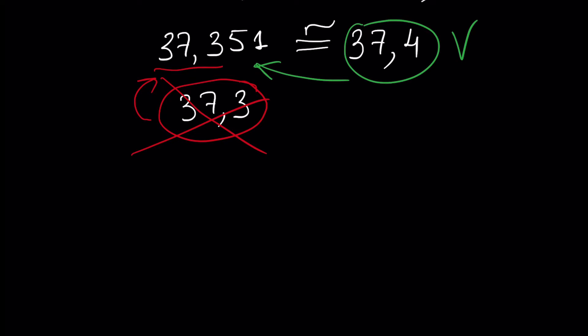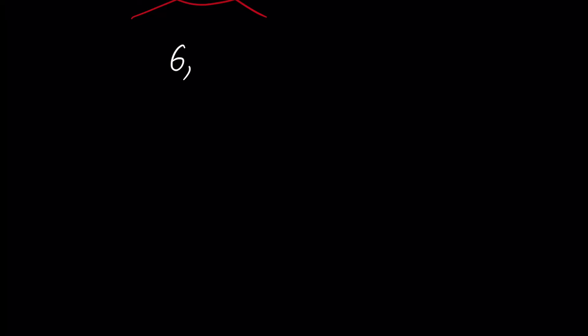Let's quickly solve another example: 6.527. In this case we want to leave two digits — the first digit and the second digit. This will be equal to 6.5, because 27 is smaller than 50, and that's why we write 6.5.